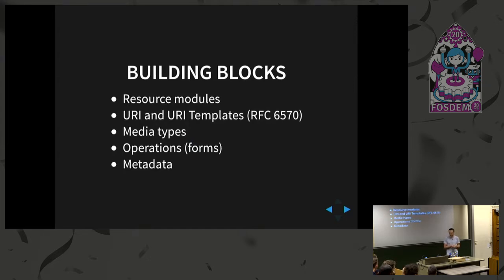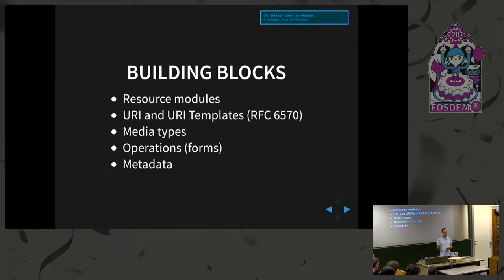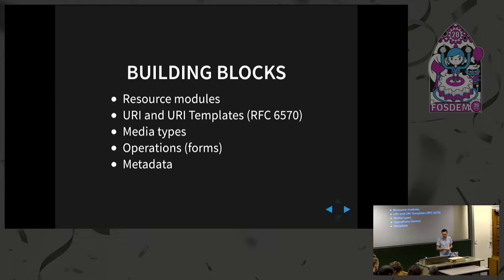There are a few building blocks. You have the resource modules — that's the Erlang code you will write. You have URI and URI templates, which is how you know which resource you want to access. You have media types, and you have operations. In HTTP you have methods like GET, PUT, POST, but POST does many things at once — it can do pretty much everything. So in Far West, there's a concept of operations on top of methods that allow you to define, for example, append, replace, things like this. And then you have metadata, for example for caching resources and providing signatures.